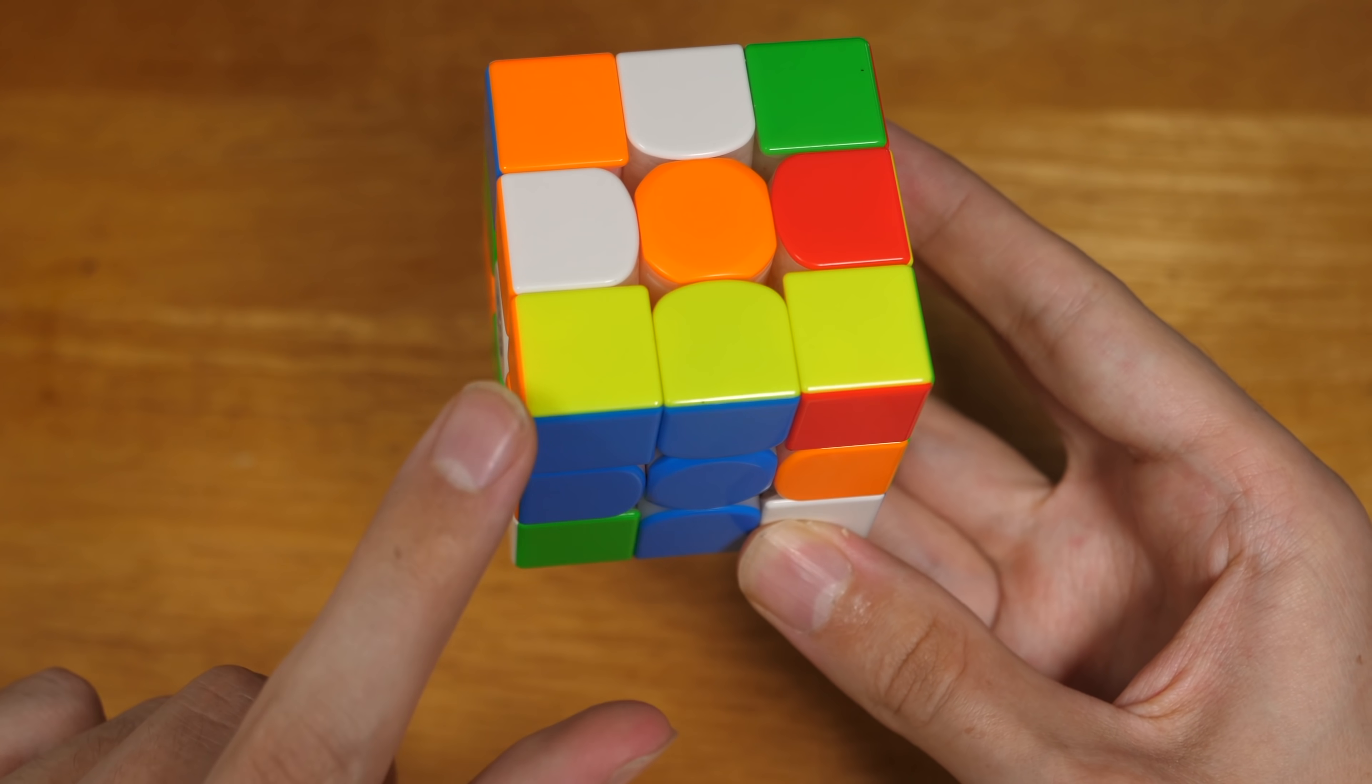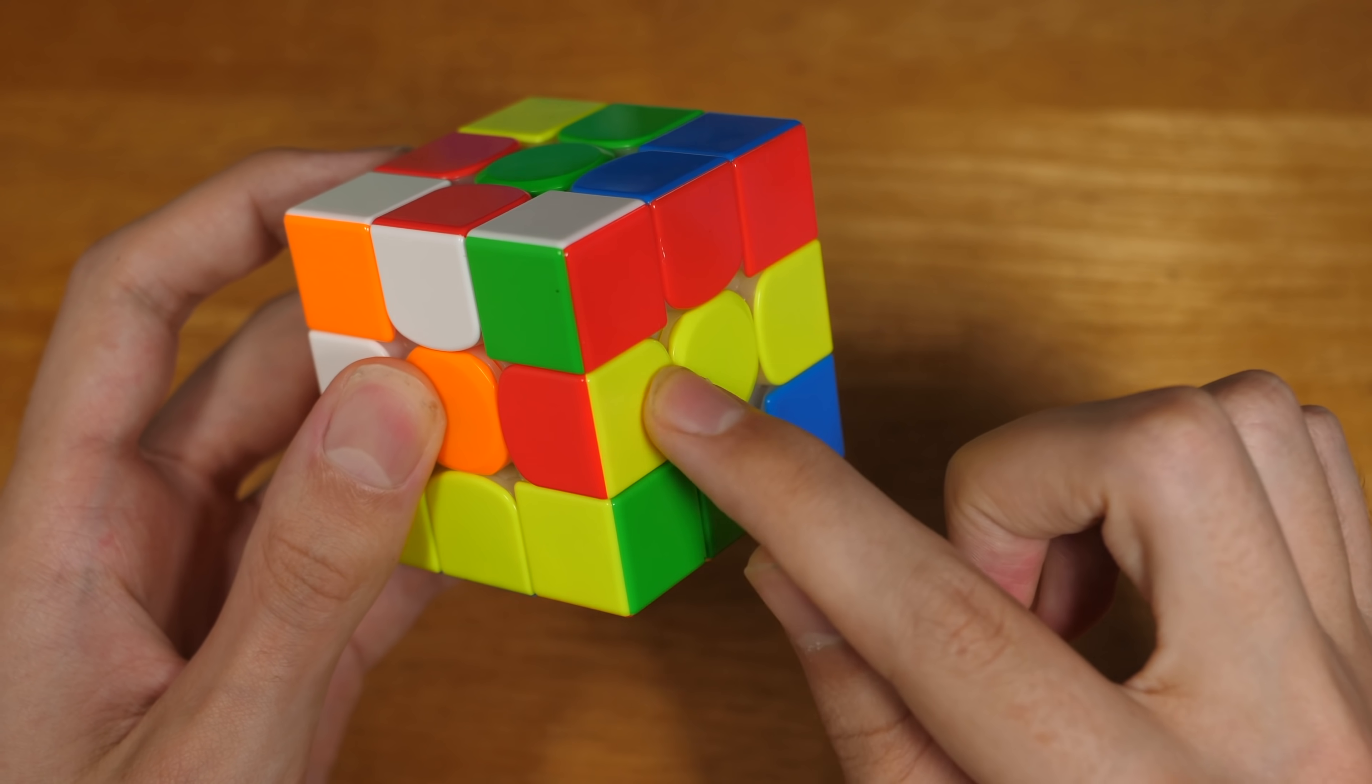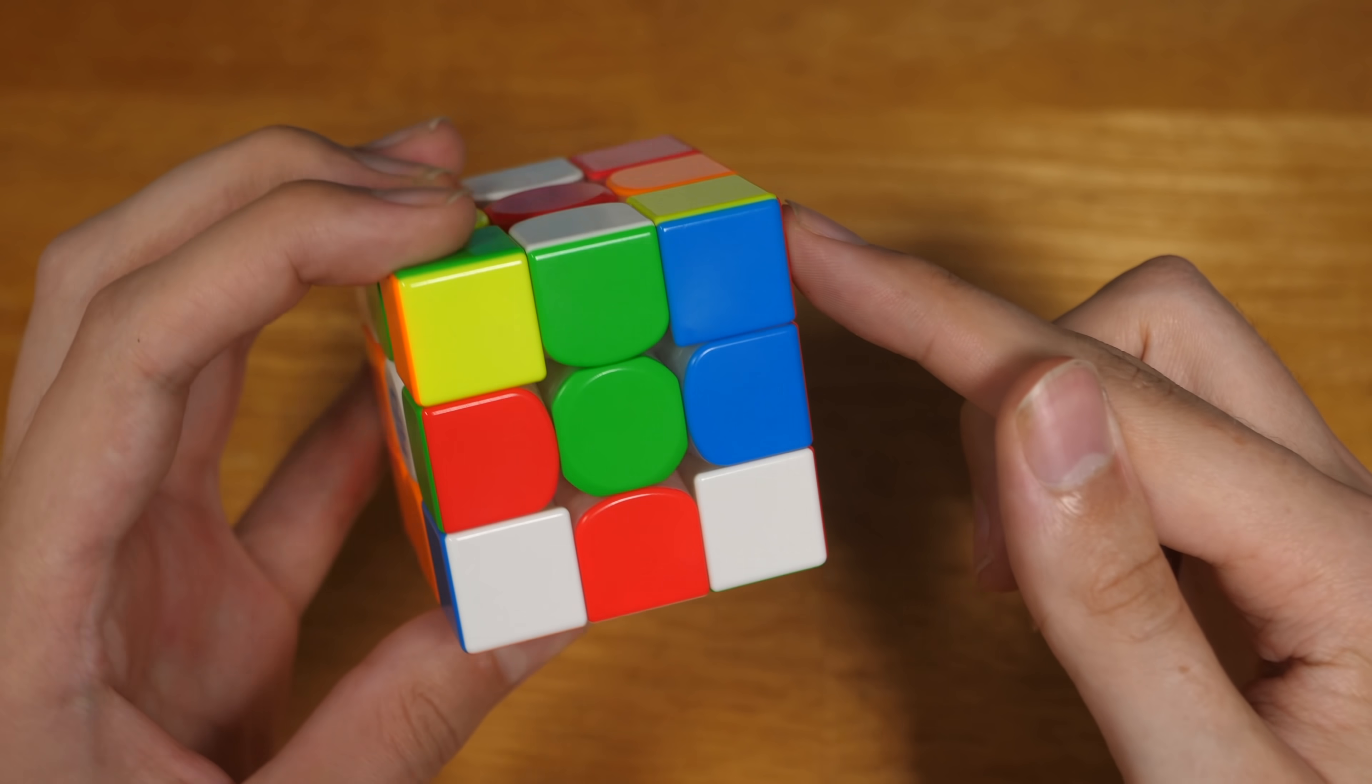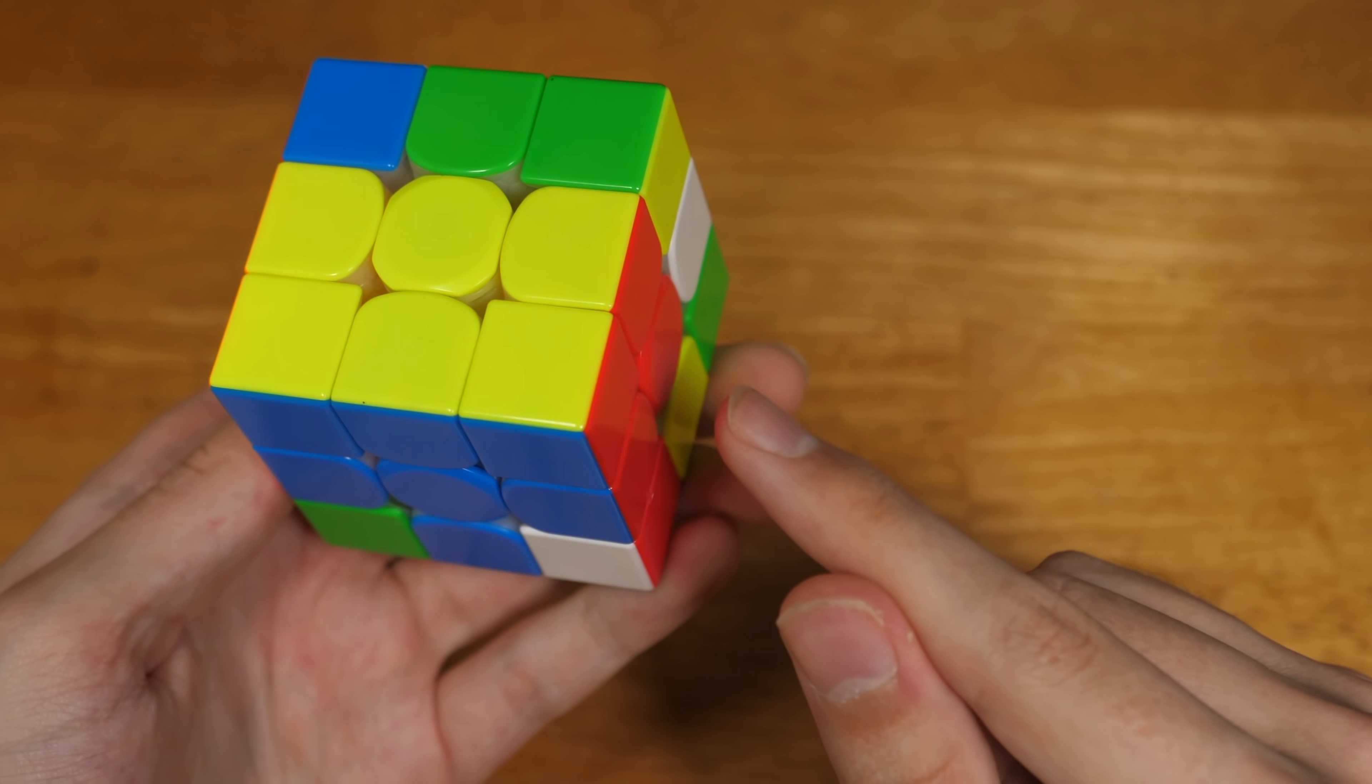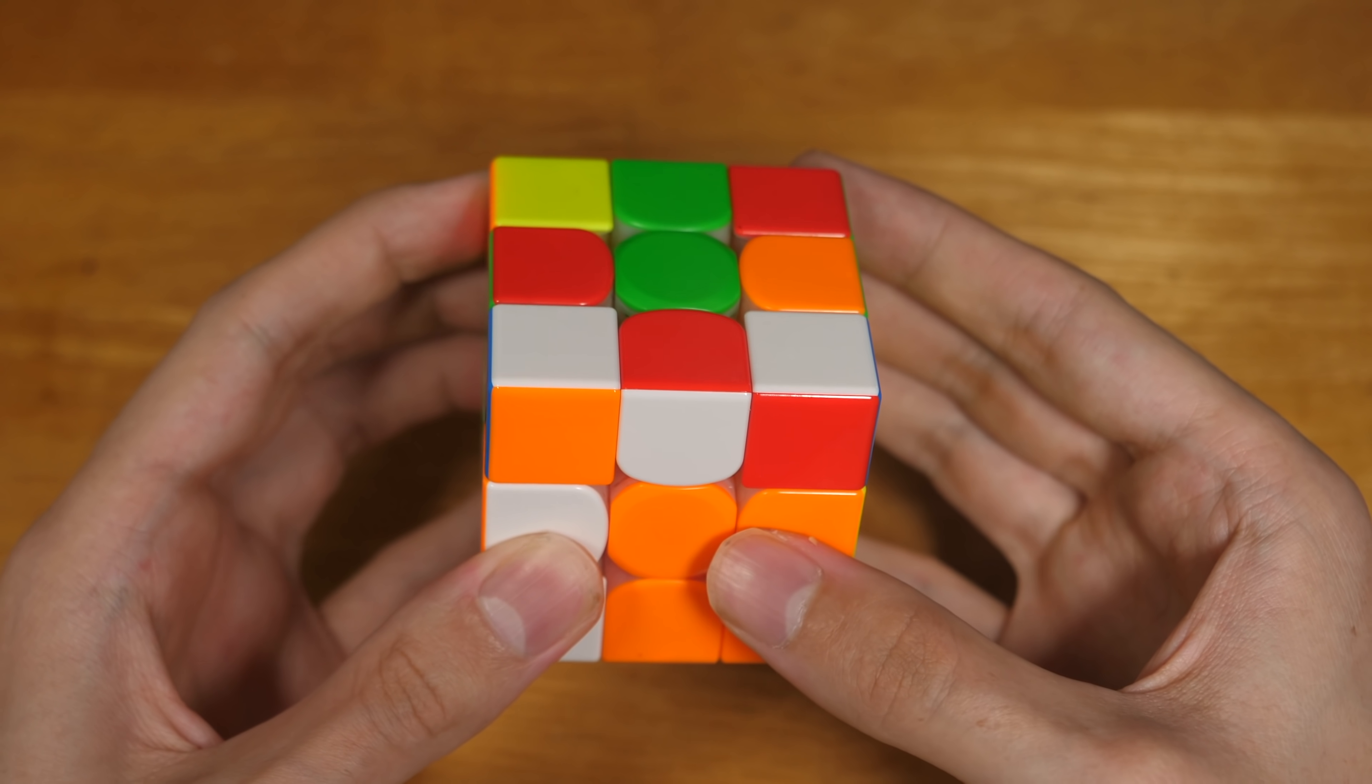Bringing in this cross edge and the corner which also set up the second layer edge, which is now opposite from this second layer edge and this corner has been preserved. Solving the cross, the corner, and aligning the bottom layer to create a double x-cross. Next he solved this pair.